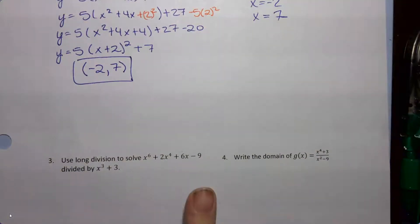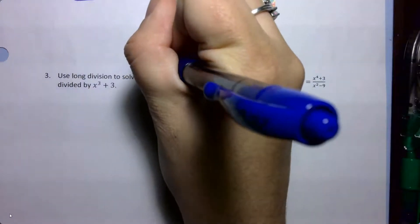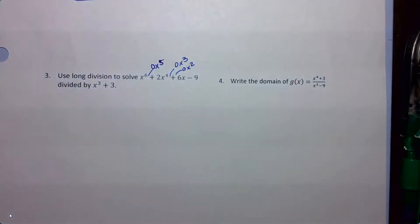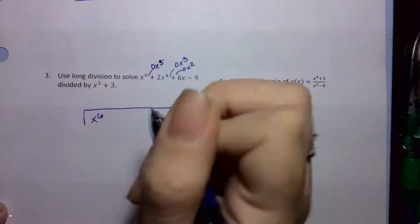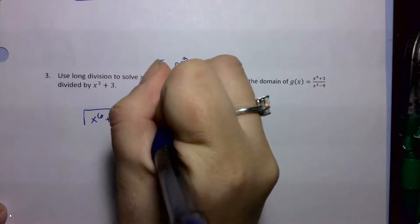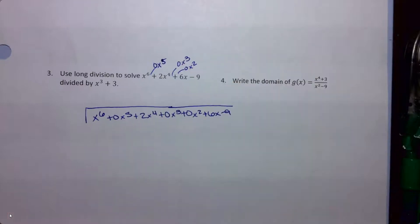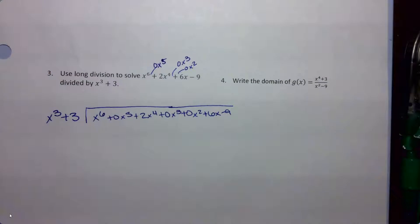Moving on to number 3 — I want to use long division to solve. First I want to make sure I have zeros as placeholders. I don't have an x to the 5th, I don't have an x cubed, and I don't have an x squared. So when I write this out for long division, I want to fill those in: x to the 6th plus 0x to the 5th plus 2x to the 4th plus 0x cubed plus 0x squared plus 6x minus 9. Then I write what I'm dividing by on the outside — I don't have to add zeros there, I just have to remember I have zero coefficients.